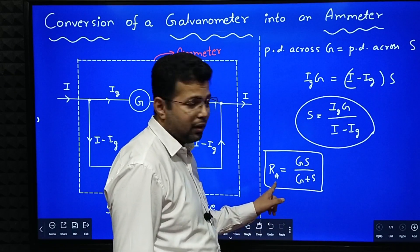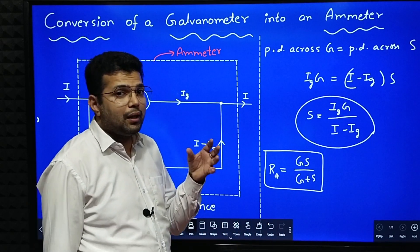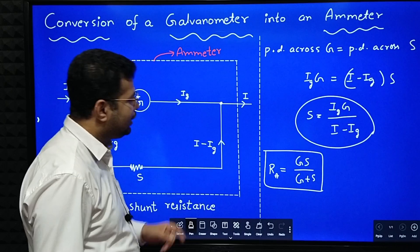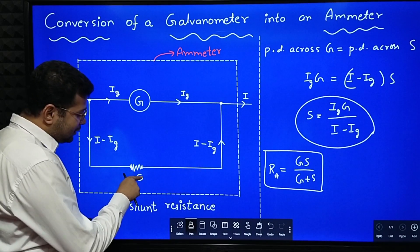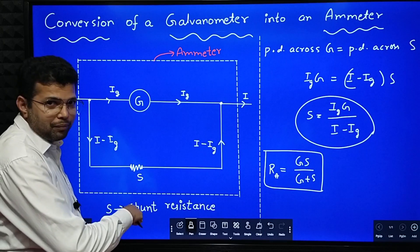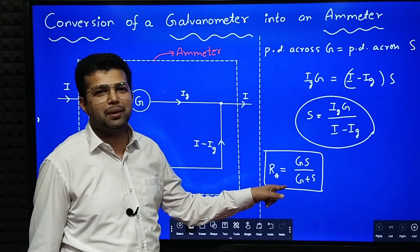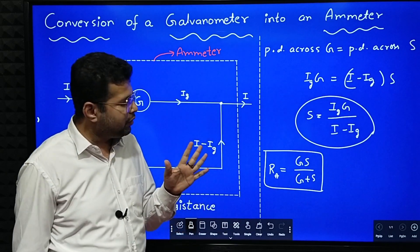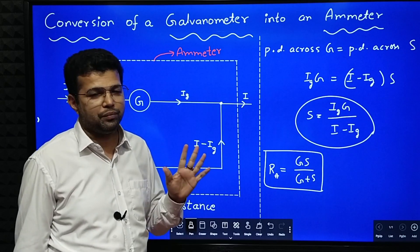Now, we know that resistance of the ammeter should be small. Why? That it should not change the value of the current flowing in the circuit. Resistance of the ammeter will become smaller and smaller if this S becomes smaller and smaller. If this S becomes 0, resistance of the ammeter becomes 0, then it will give you exact value of current. So that is why we say resistance of ideal ammeter is equal to 0.